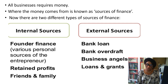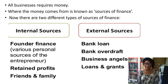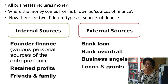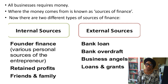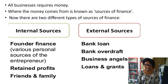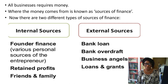The first internal source is the founder's finances. Some people save money towards financing their business. The founder can draw money from family, friends, or from savings accumulated while working. For businesses already in operation, internal sources also include retained profit — instead of spending all profit, you leave some to add to your equity funding.